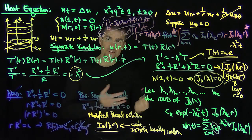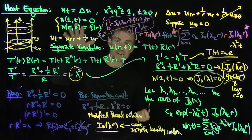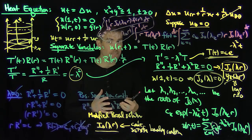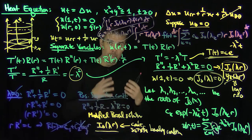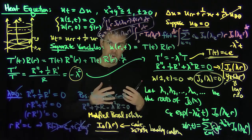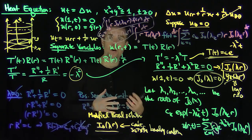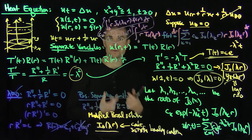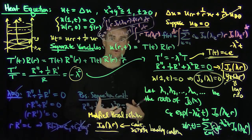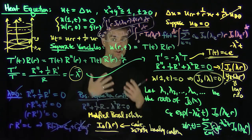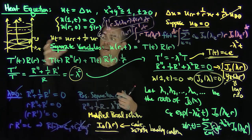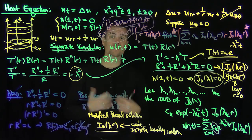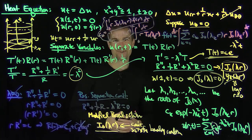Substituting these c_k expressions into the series formula gives the solution to the boundary value problem with the given initial data. By analogy with Fourier series convergence, using the orthogonality of Bessel functions with respect to weight r dr on [0,1], we can conclude that these are exactly the coefficients yielding a unique solution to the heat equation in this disk under the assumption of no angular dependence on the temperature distribution. Thank you very much.